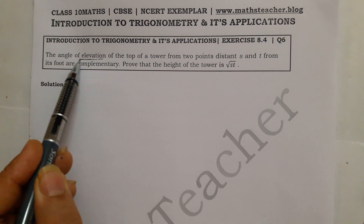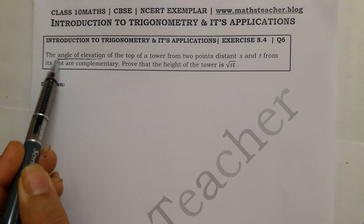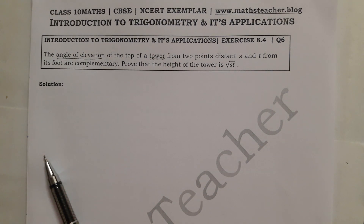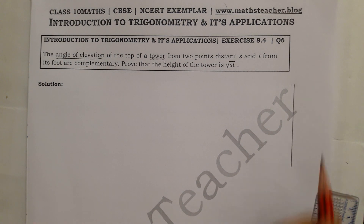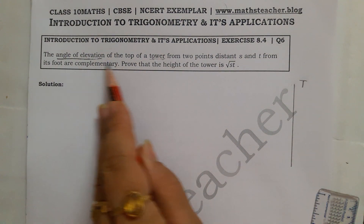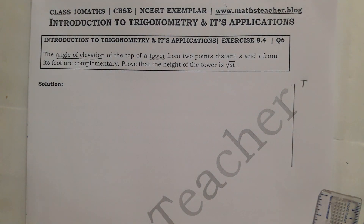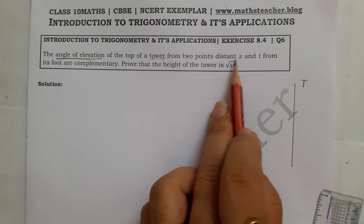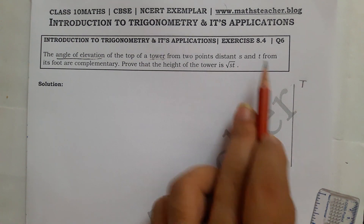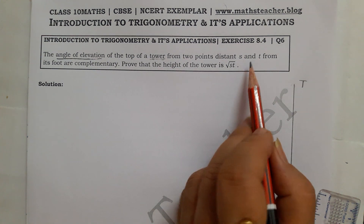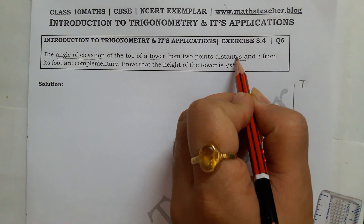We are looking at the angle of elevation. First, we will make a tower — I have made a tower and named it T. The angle of elevation of the top of the tower is taken from two points, and here we have two angles of elevation shown.